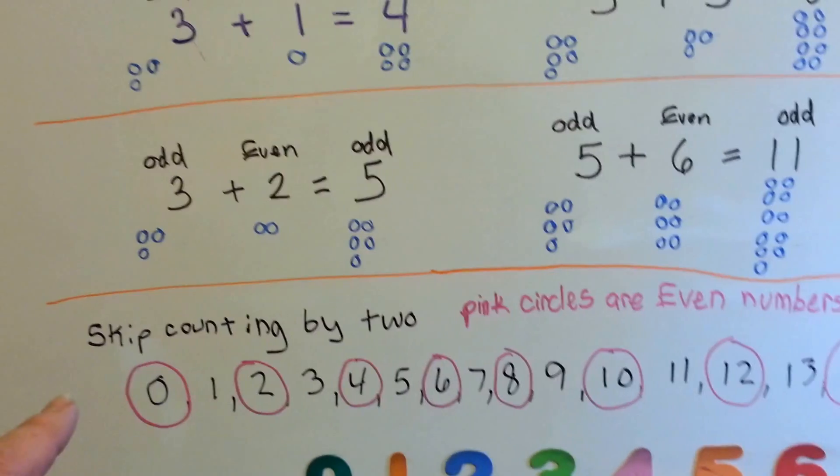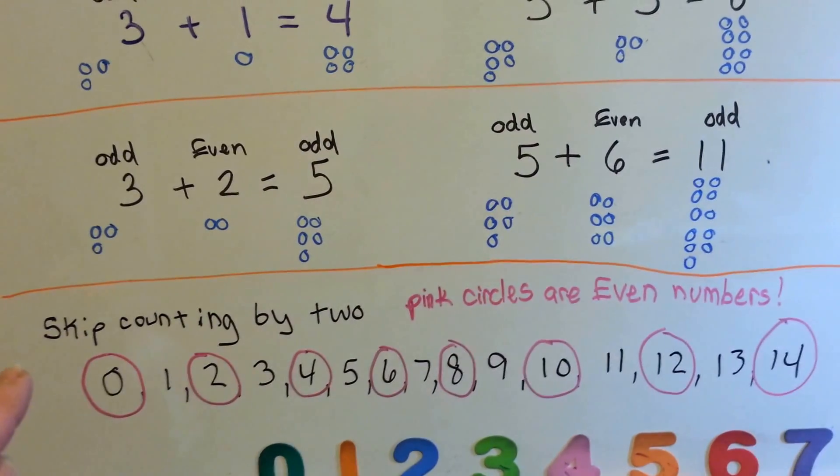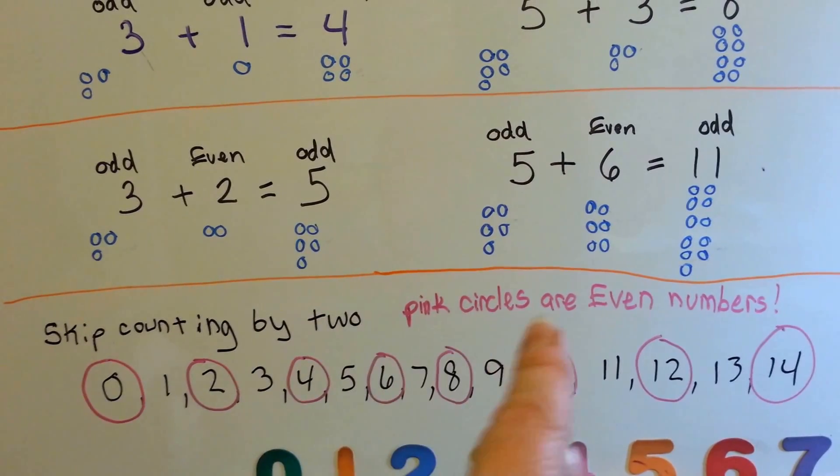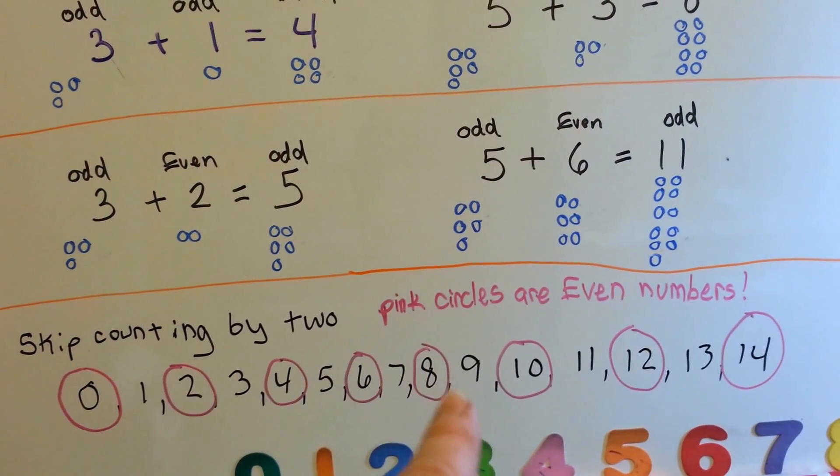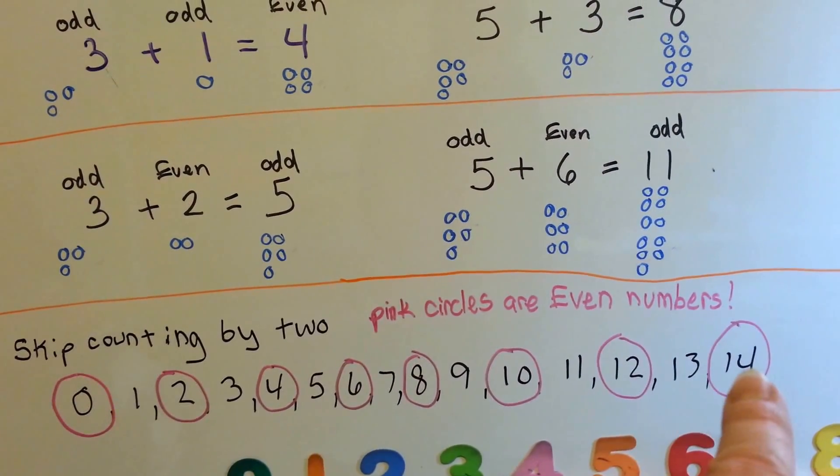So if you were skip counting by twos, all the ones that are circled in pink are even numbers. 0, 2, 4, 6, 8, 10, 12, 14.